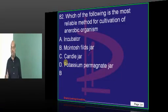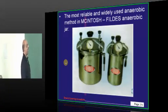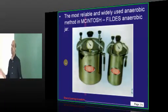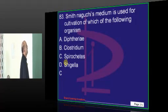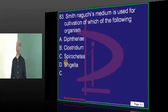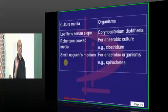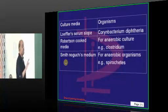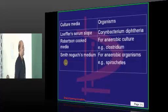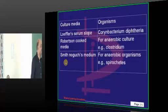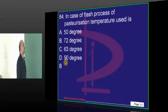If you want to grow an anaerobic organism, the most reliable method is the McIntosh-Fildes anaerobic jar. Smith-Nagouchi's medium — a little Japanese we should learn for NEET-PG. Loffler's is for Corynebacterium. Robertson's cooked meat medium is typical for Clostridium-like organisms. Smith-Nagouchi is for spirochetes, which are anaerobic organisms.